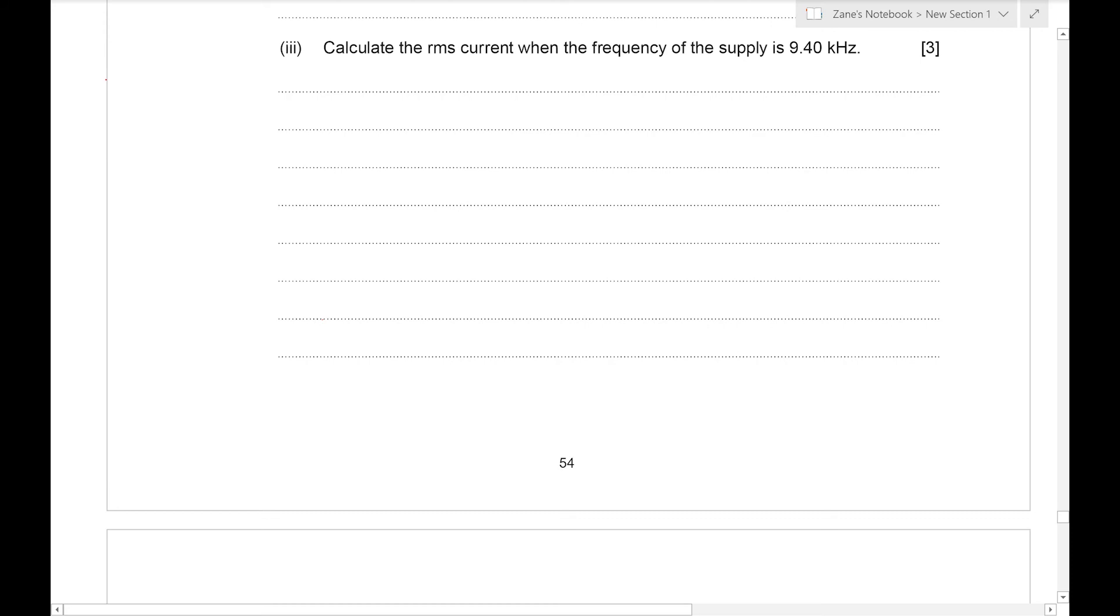Next we're going to calculate the RMS current when the frequency of the supply is 9.4 kilohertz and it's no longer at resonance. So we're going to do this in bits. First of all we're going to calculate X_L which is ωL or 2πFL, so it's 2π times 9.4 times 10³ times the 5.2 millihenries, and that gives us about 307 ohms. Similarly X_C is 1 over 2πFC, so it's 1 over 2π times the 9.4 times 10³ times the 220 nanofarads and that gives us about 77 ohms.